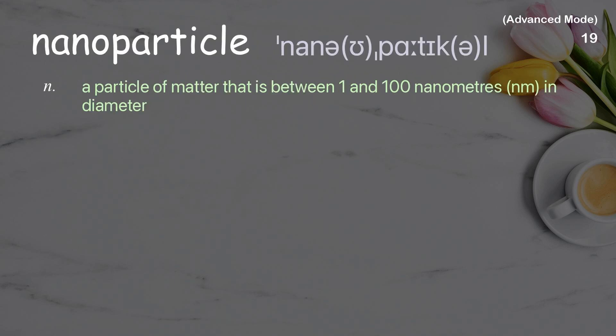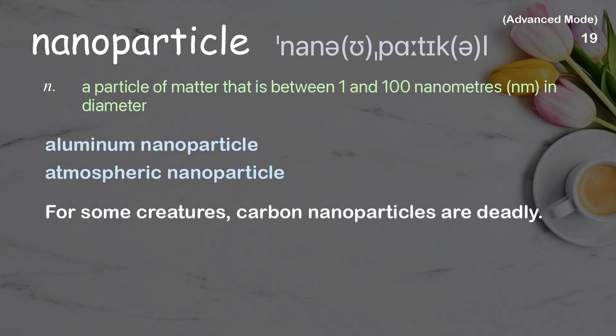Nanoparticle. A particle of matter that is between 1 and 100 nanometers (nm) in diameter. Examples: Aluminum nanoparticle. Atmospheric nanoparticle. For some creatures, carbon nanoparticles are deadly.